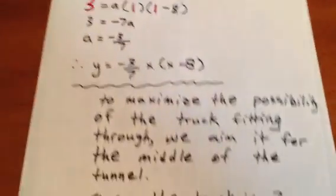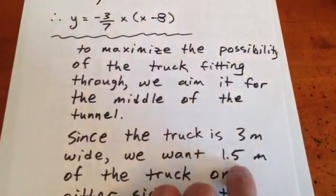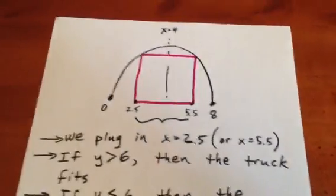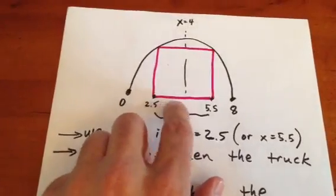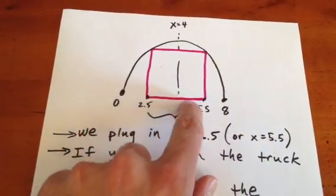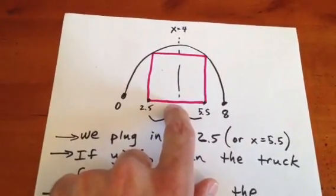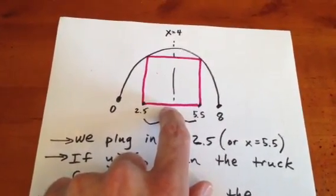And if we have a 3 meter wide truck and 1.5 meters is on either side, then what we're going to have is 1.5 meters to the left of 4 and 1.5 meters to the right of 4. So our truck will be represented by this red box trying to fit through that black parabola.